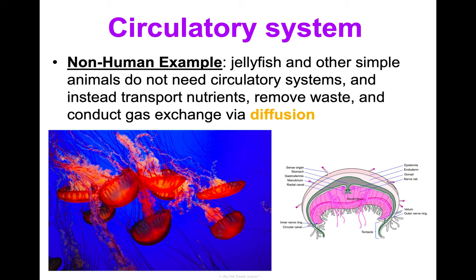The reproductive system allows animals to produce offspring. It works by producing egg and sperm, releasing hormones that signal for nurturing and developing offspring. Key structures differ between males and females. In males: the testes and penis — the diagram here shows important structures including the testes and the urethra running through the penis. In females: the vagina, uterus, ovaries, and fallopian tubes are among the key structures.